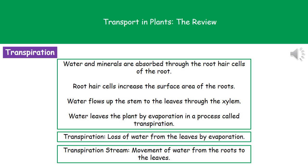Water and minerals are going to be absorbed through those root hair cells in the root. The reason we use those root hair cells is to increase the surface area of the roots so that this can happen faster. Once the water's inside our plant, it's got to flow up the stem to the leaves through our xylem, and then the water is going to leave the plant by evaporation in this process of transpiration.